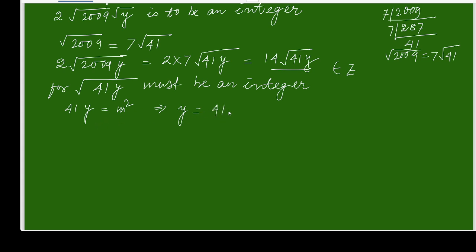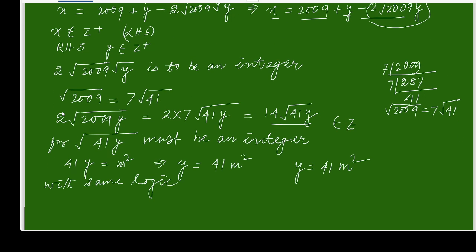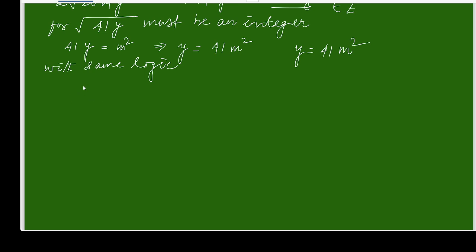For square root of 41y to be an integer, 41y must be a perfect square. So I take y equal to 41 times m squared. With the same logic, taking y to the left hand side gives x equal to 2009 plus x minus 14 times square root of 41x, and so by the same reasoning x equals 41 times n squared.